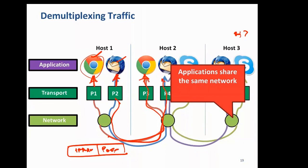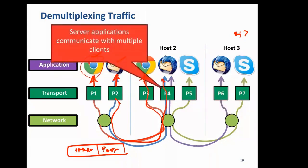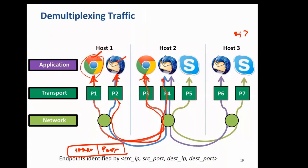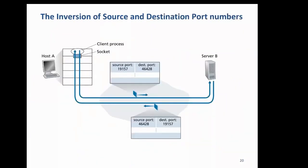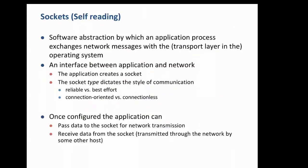Many client applications may connect to the same server. When a client process wants to communicate, it creates a socket with a source port and destination port. TCP adds source and destination port numbers; IP then adds the destination and source IP addresses and other fields. Please read about socket and socket programming if you have not done so.